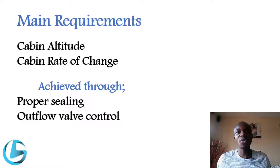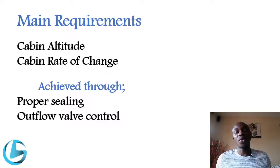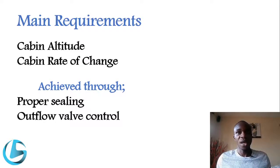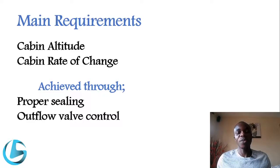A good pressurization system should be able to control the cabin rate of change. A comfortable climbing rate should not exceed 500 feet per minute, and a comfortable descent rate should not exceed 300 feet per minute. This is achieved through proper sealing of the aircraft cabin, with no leaks that would allow air pressure to escape.